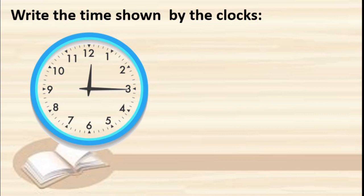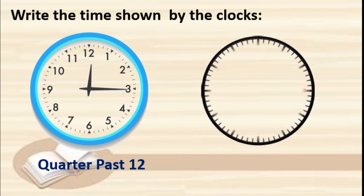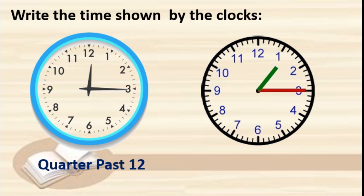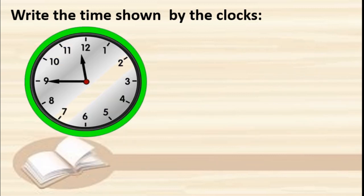Now write the time shown by the clocks using time language. The hour hand is between 12 and 1, and the minute hand is on 3, so this is quarter past 12. Next: quarter past 1 — because 15 minutes is nothing but quarter past. Next clock: the hour hand is between 11 and 12, and the minute hand is on 9. Up to 6 we use 'past', and from 6 to 12 we use 'to' — so this is quarter to 12.